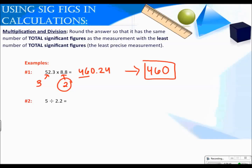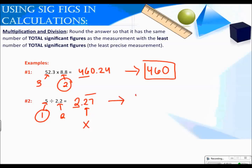For number two, dividing 5 by 2.2 gives 2.27 repeating. My first measurement has one sig fig and my second has two. You always round to the least number of significant figures, so my answer should have one sig fig. Looking at the digit after, it's not five or larger, so it's not big enough to round up. My final answer is just two.